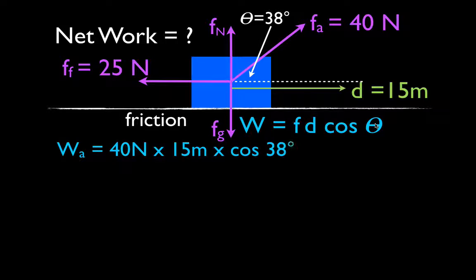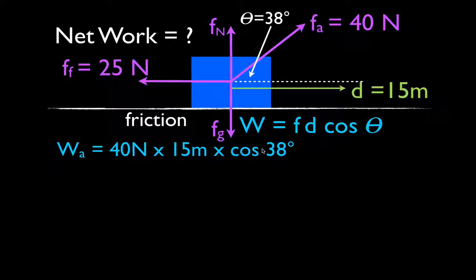For the applied force, the force is 40 newtons, the distance the object moves is 15 meters, and the angle between the displacement and the force — theta — is 38 degrees, so it's just the cosine of 38 degrees. When we multiply these two times the cosine of 38 degrees, what we're getting is the component of the force that is parallel to the displacement.